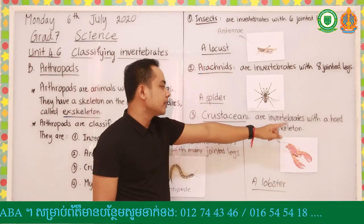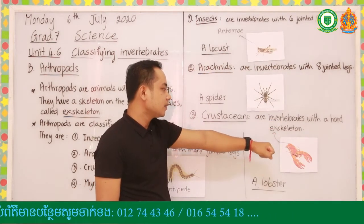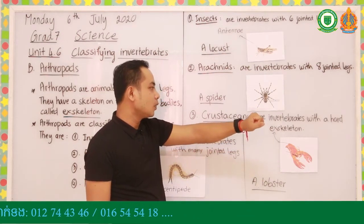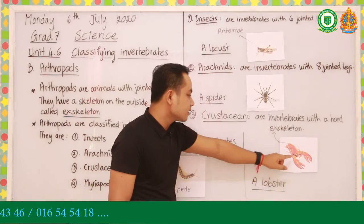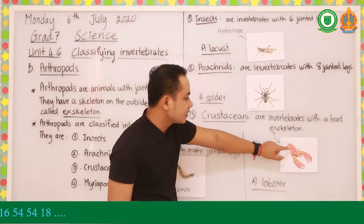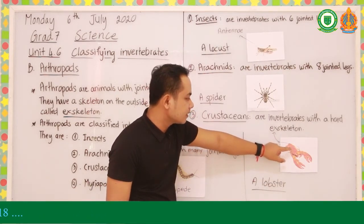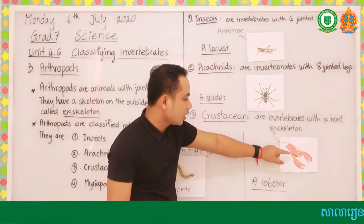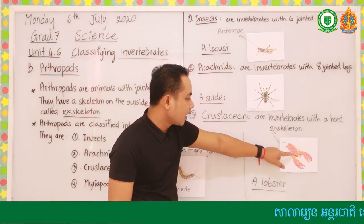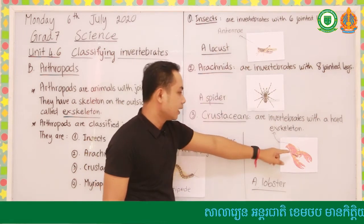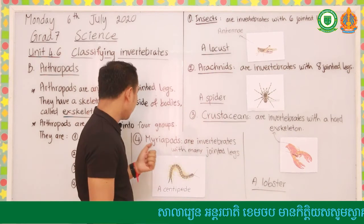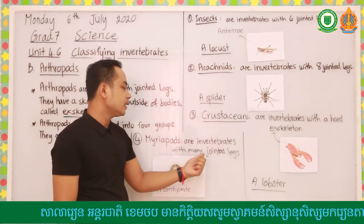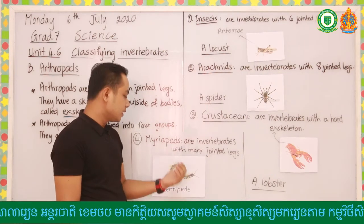Crustaceans are invertebrates with a hard exoskeleton, like crabs, water fleas, lobsters, and woodlice. The skeleton is outside of the body, and crustaceans have one or two pairs of antennae. The last group is myriapods - myriapods are invertebrates with many jointed legs.